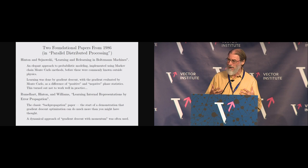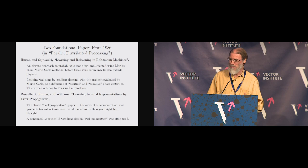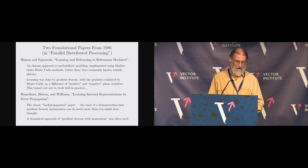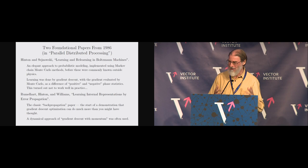Boltzmann machines are latent variable models with random variables capturing hidden features underlying observations in visible variables. Markov chain Monte Carlo is used to sample hidden variables conditional on the visible ones. The learning is done by gradient descent, with the gradient stochastically evaluated using MCMC for the hidden units — though it actually requires two MCMC simulations and taking the difference, which is a very noisy way of getting a gradient. Accordingly, this didn't work very well in practice. Jeff was apparently very disappointed with this, as it was one of his most theoretically elegant pieces of work.